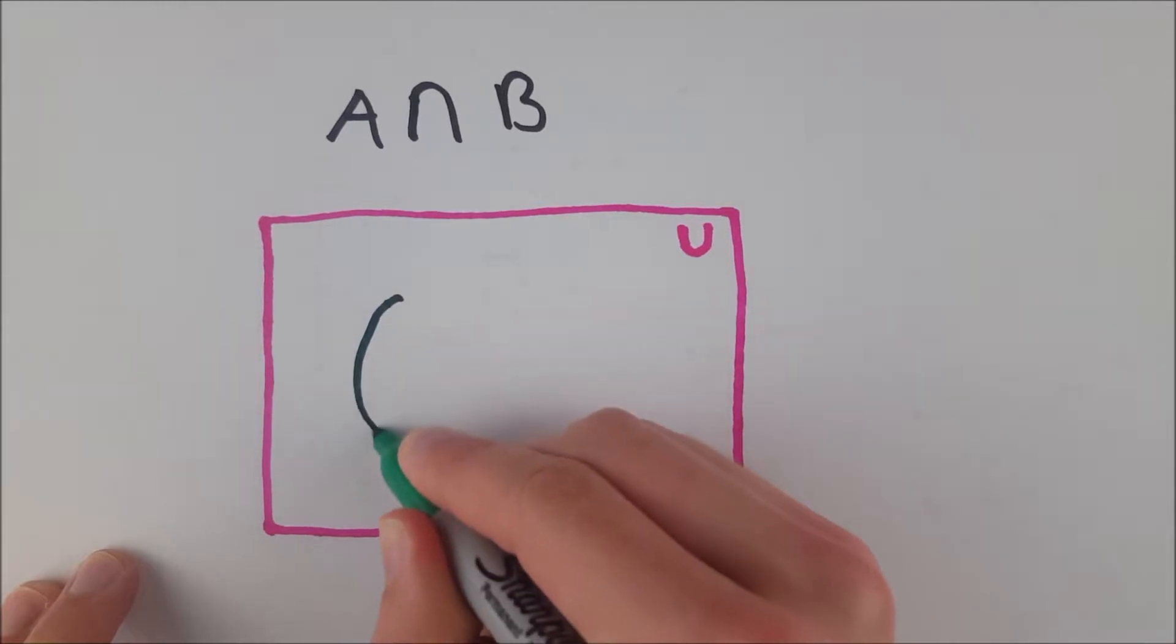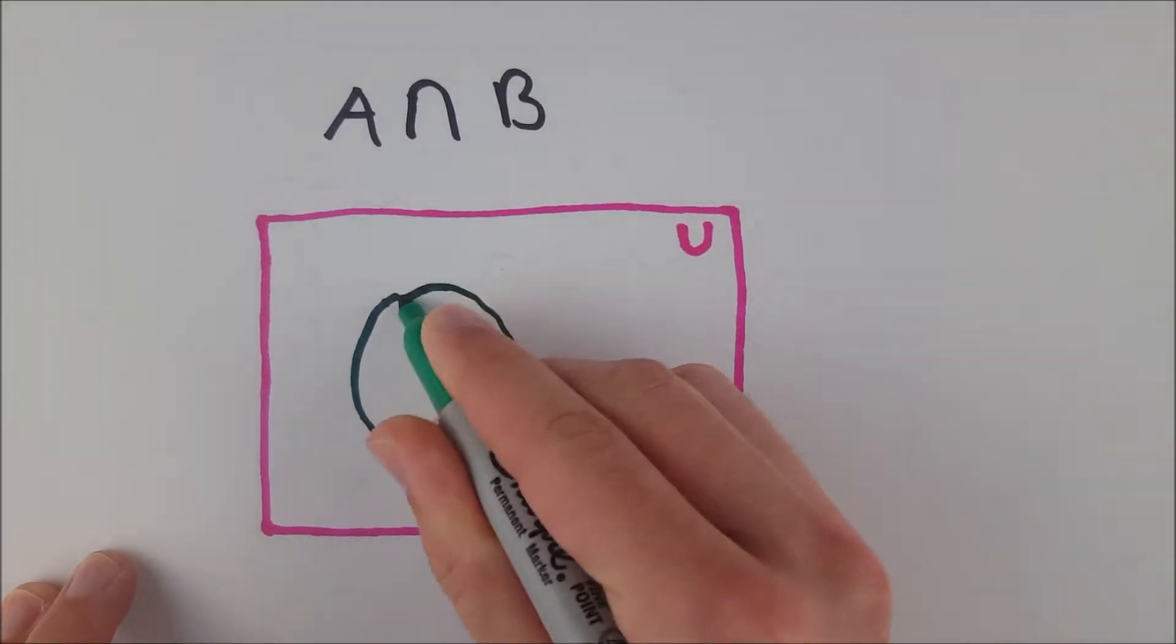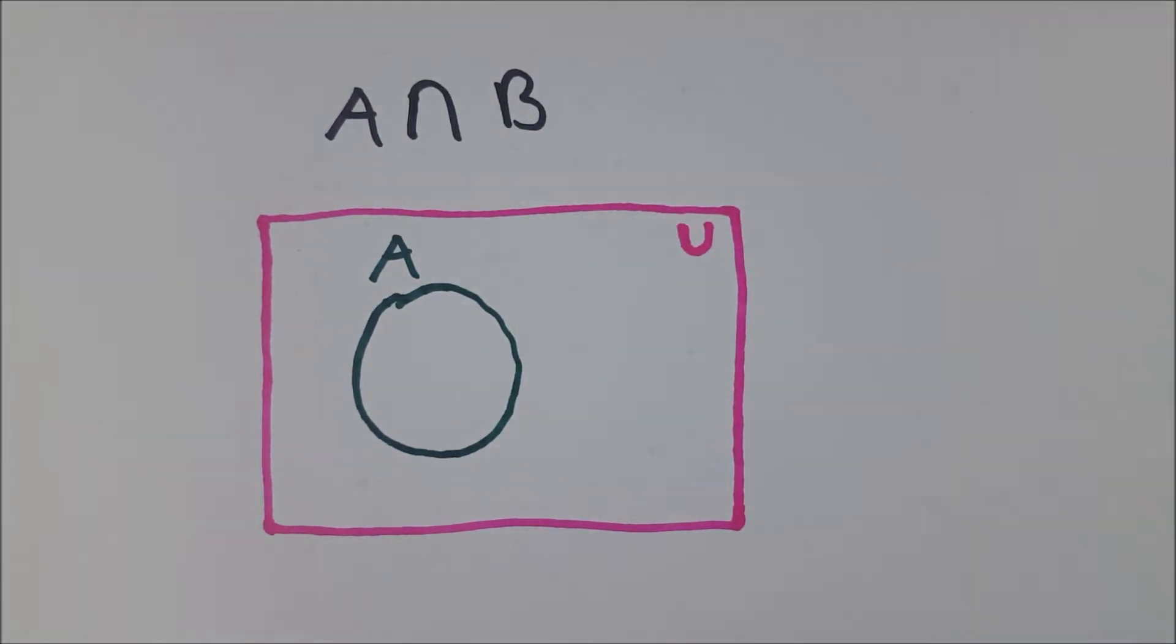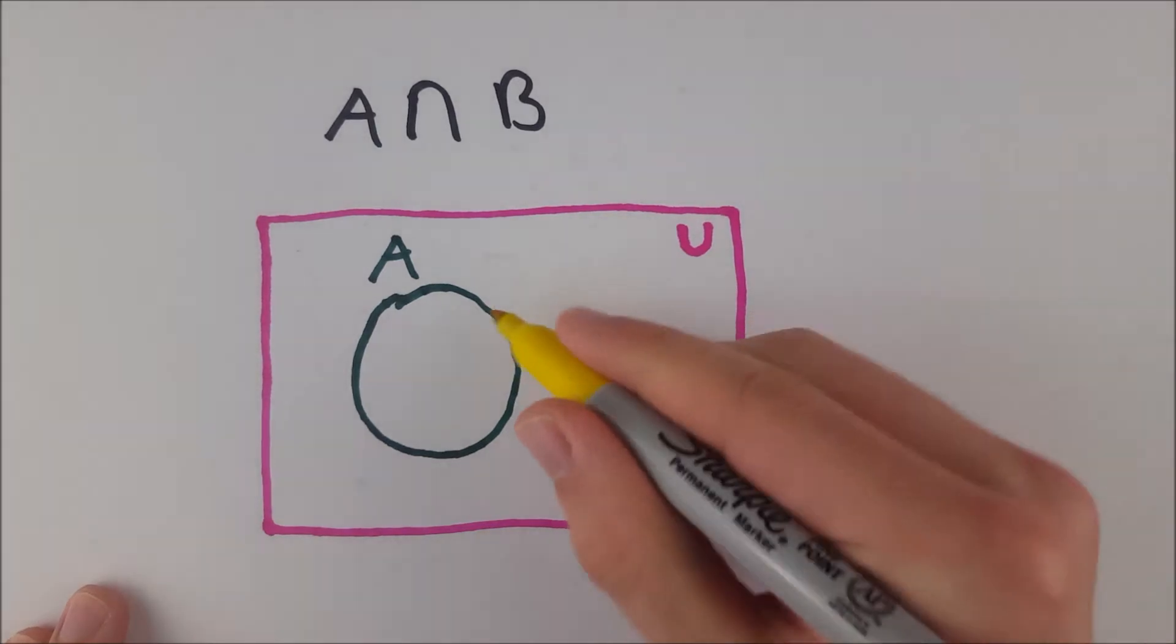So we have our green set, A. Looks something like this. Nice big circle. We don't know what's in there, but presumably something is. And even if nothing is, that doesn't destroy the example.